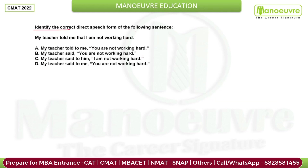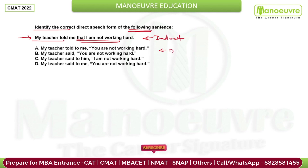Next question: identify the correct direct speech from the following sentences. The sentence given is: 'My teacher told me that I am not working hard.' Since 'that' is used, the sentence is in indirect form, and the options are given in direct form.